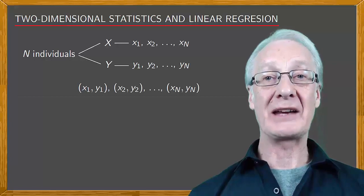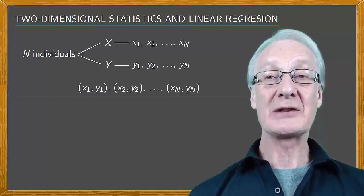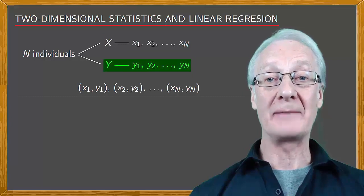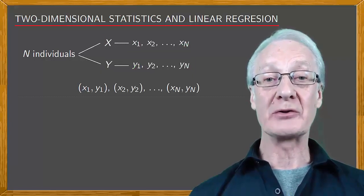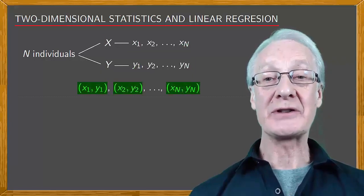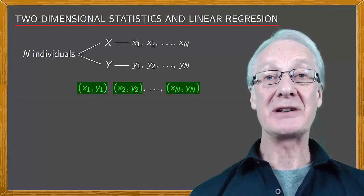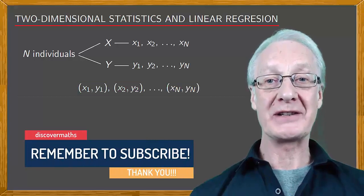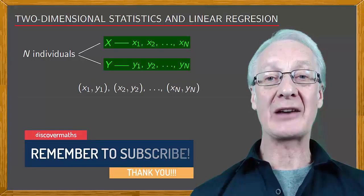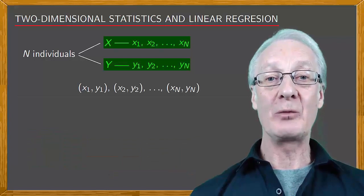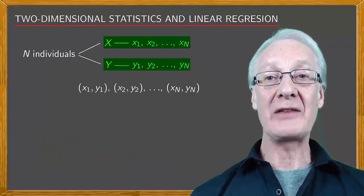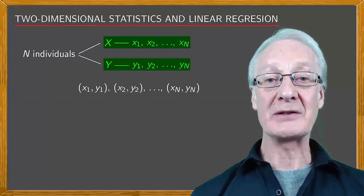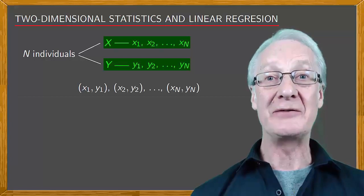A simple example, as we mentioned earlier, is where the variables are the heights of people x, and the weights y. Each individual corresponds to a data pair whose first element is the person's height, and the second element is their weight. With one-dimensional statistics, we'd analyse the variables x and y separately. We'd obtain tables for x and y, then plot graphical representations, and calculate the parameters for both x and y, individually.